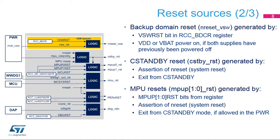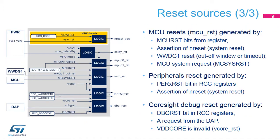When a system reset occurs, or when the system exits from C-Standby mode if allowed by PWR management, the MCU reset is performed. The MCU reset occurs when the MPU asserts the MCURST bit, when a system reset occurs, when the window watchdog is not reloaded at the right moment, or when the MCU requests a system reset. The reset of the system can be blocked by an option byte, but the reset of the MPU is still performed. Peripherals are reset either by their respective reset bit in RCC registers or by a system reset. Debug parts are reset when the DBGRST bit is asserted on request of the DAP, or when the VDD core is invalid.